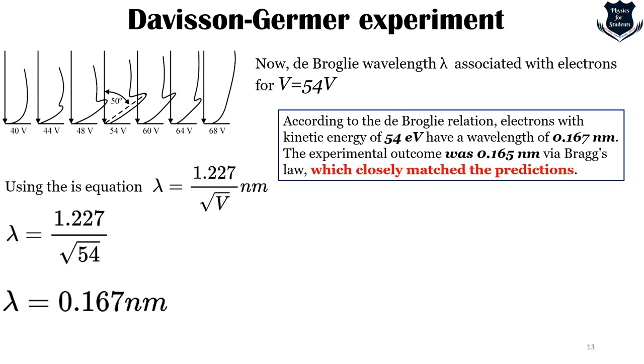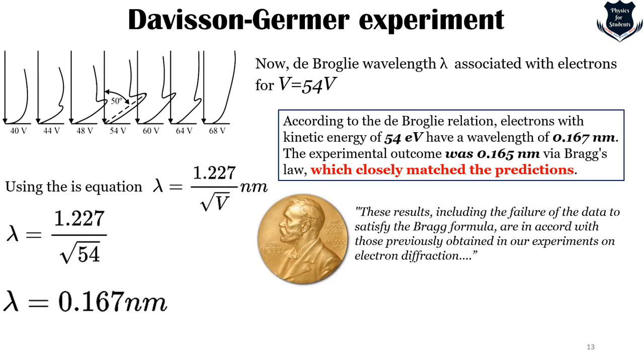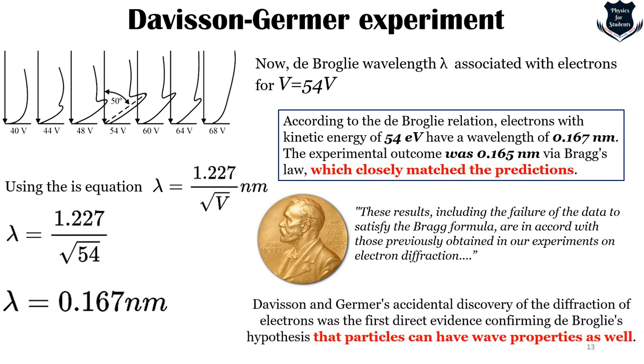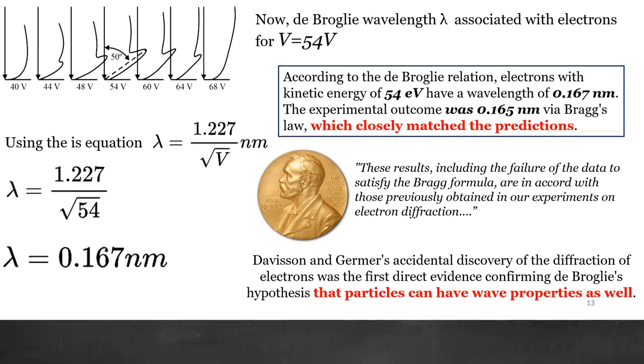When they won the Nobel Prize in Physics, they wrote that these results, including the failure of the data to satisfy the Bragg formula, are in accord with those previously obtained in our experiments on electron diffraction. The reflection data failed to satisfy the Bragg relation for the same reason that the electron diffraction beams failed to coincide with the light beam analogs. However, Davison and Germer's accidental discovery of the diffraction of electrons was the first which detected and confirmed de Broglie's hypothesis that particles can also have wave properties. Because if it did not have wave properties, then how would it meet with the value which was earlier detected by de Broglie at 54 volts.